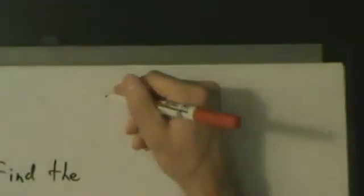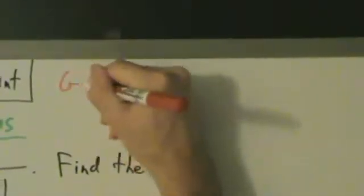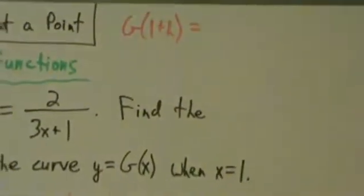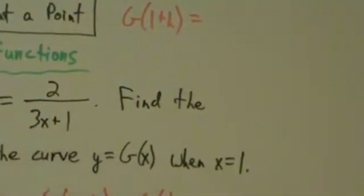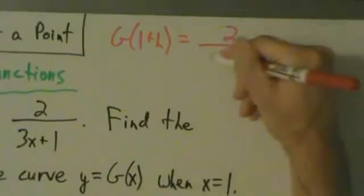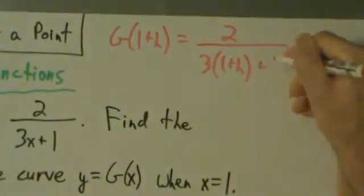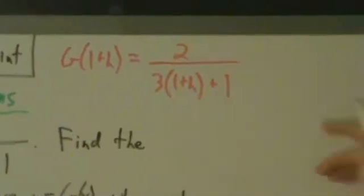So let's first go ahead and figure out what's G(1+h) and what's G(1). So we'll come up here. G(x) is 2/(3x+1), so G(1+h) is going to be 2/[3(1+h) + 1].